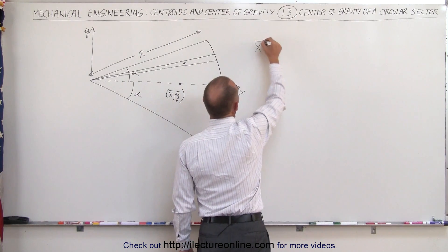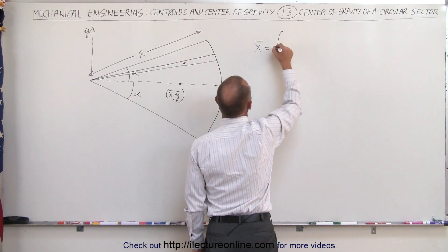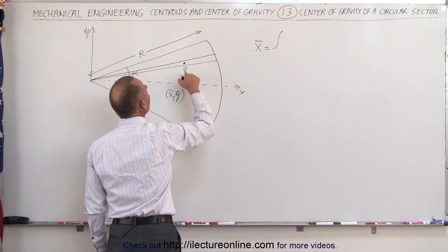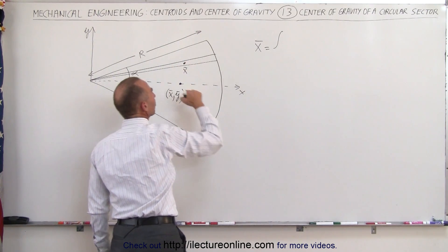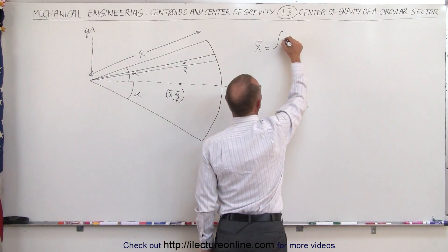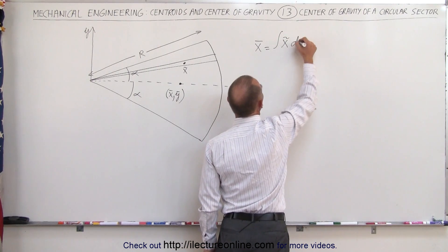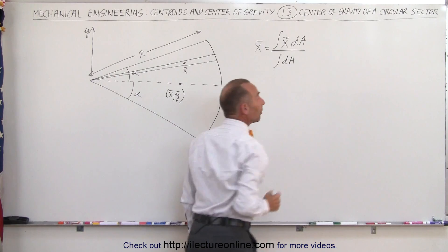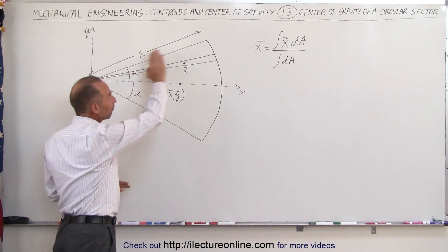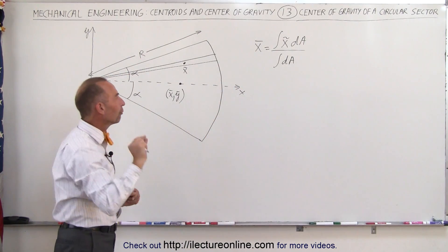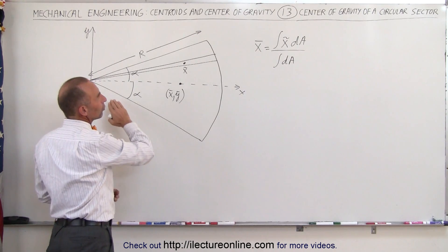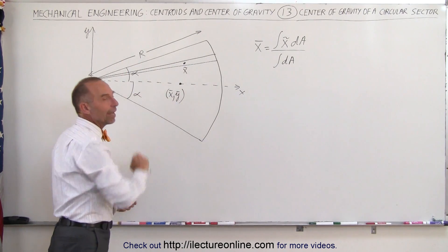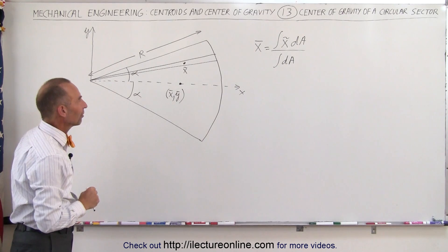The x coordinate of the center of mass is equal to the integral of the x coordinate of the center of mass of this little slice, times dA, divided by the integral of dA. Remember, if this represents a plate of small uniform thickness and the density of the plate is the same, we can use area instead of mass to find the center of mass.